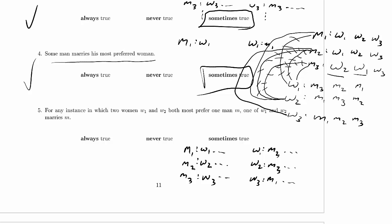Is it sometimes true? Sure. We can have all three women prefer m-3 and w-3 will marry m-3. Or with just two women both most preferring m-1 and m-2 — who cares about their preferences — w-1 most prefers m-1, w-2 most prefers m-1, and one of them is going to marry m-1. So this is sometimes true but not always true. That completes the problem.